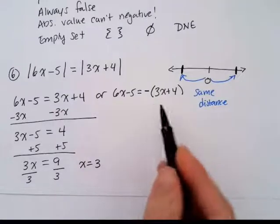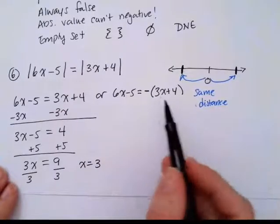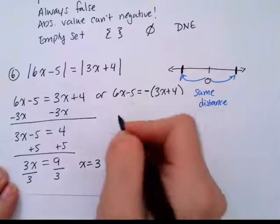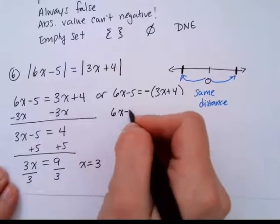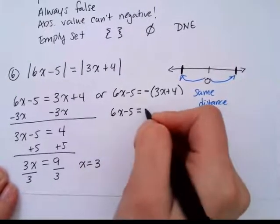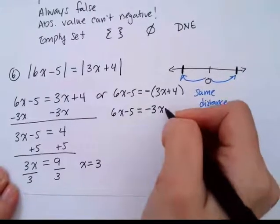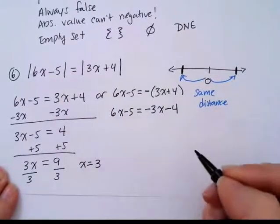Now I want to solve the other equation here. So this negative needs to be distributed first. Let me rewrite that. 6x minus 5 equals negative 3x minus 4.